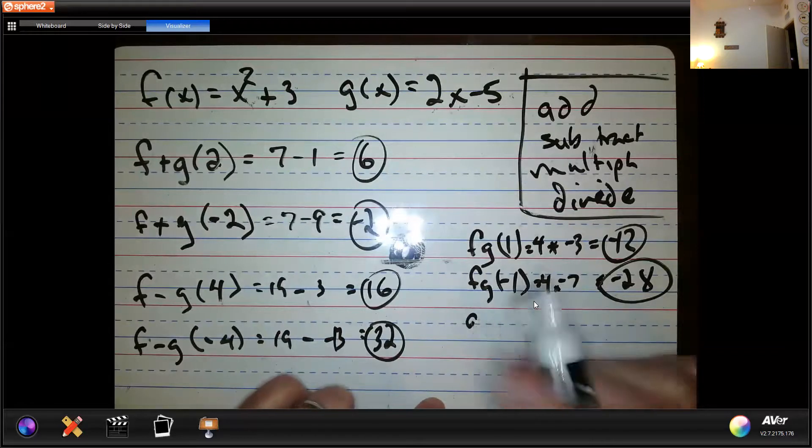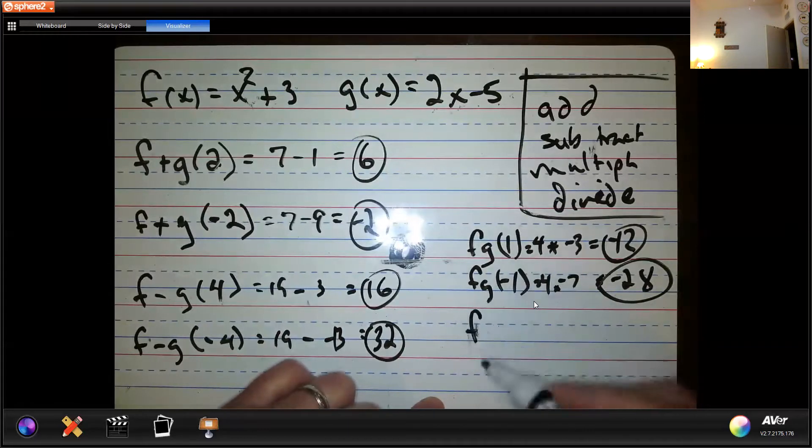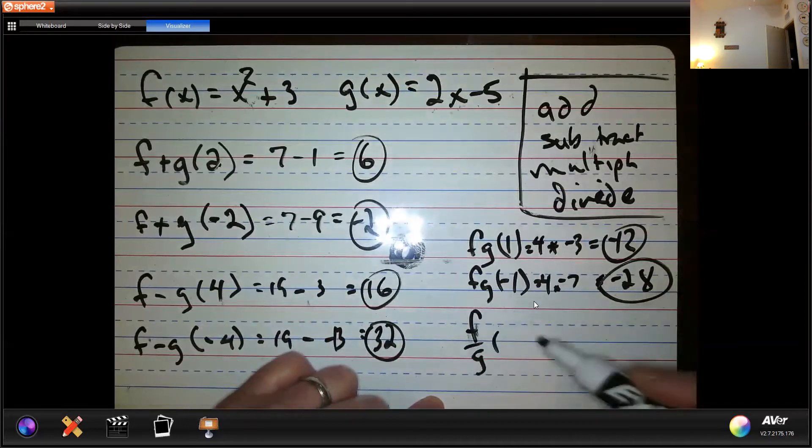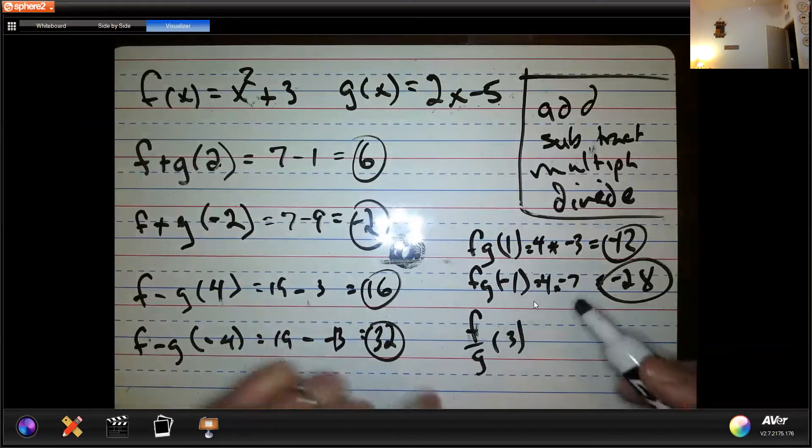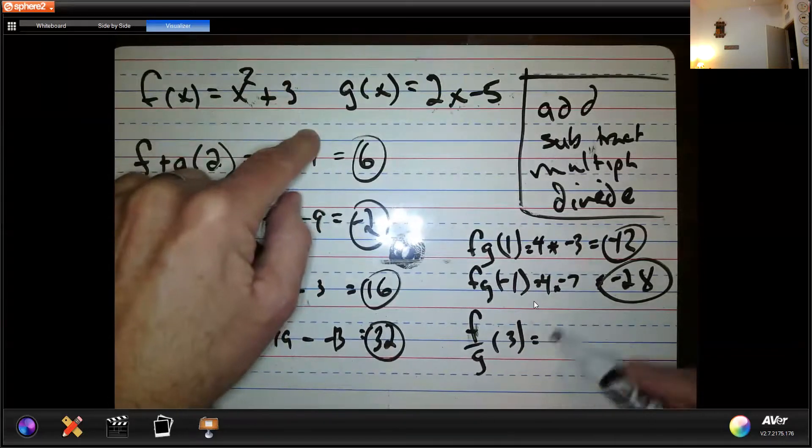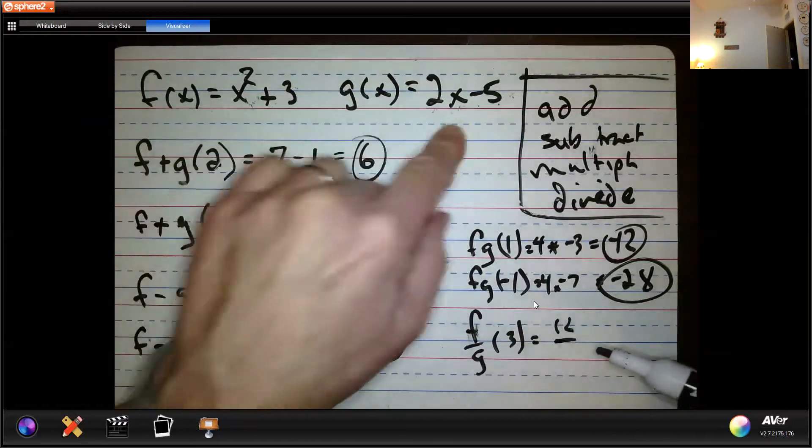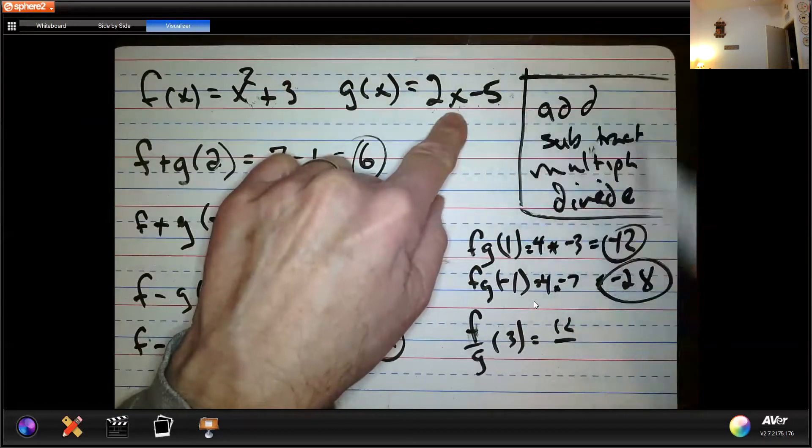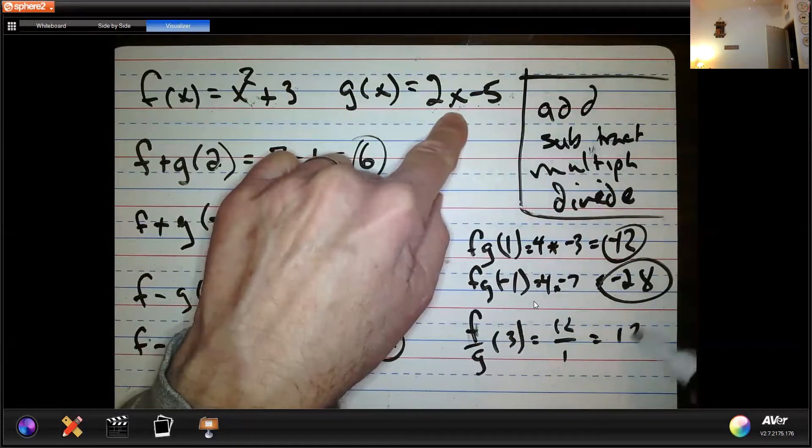So the last one, the last one, what if I did f divided by g, and I pick, say, 3, okay? f, 3 goes in 9, 10, 11, 12, that would be 12 on top. Put 3 in here, that's 6, minus 5, that'd be 1. Hey, that's 12.